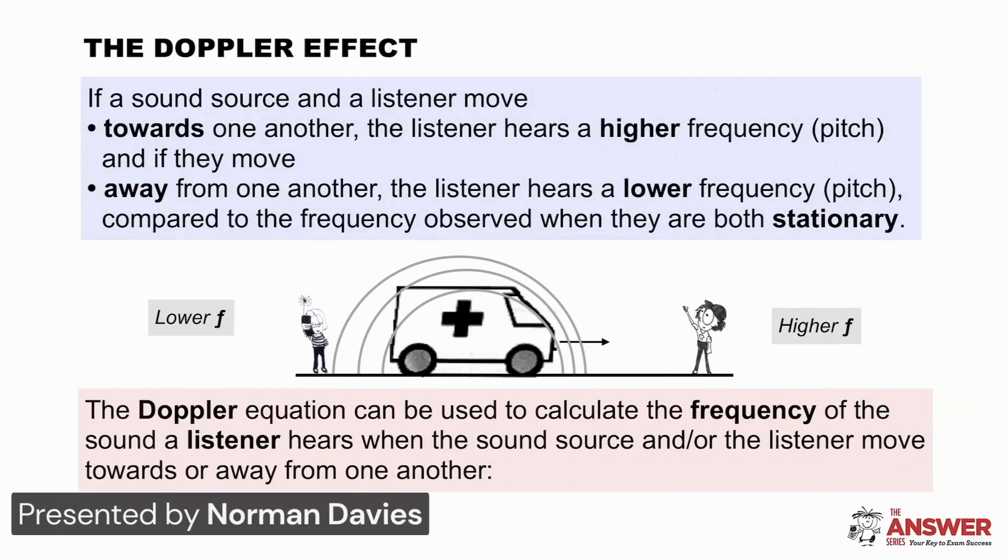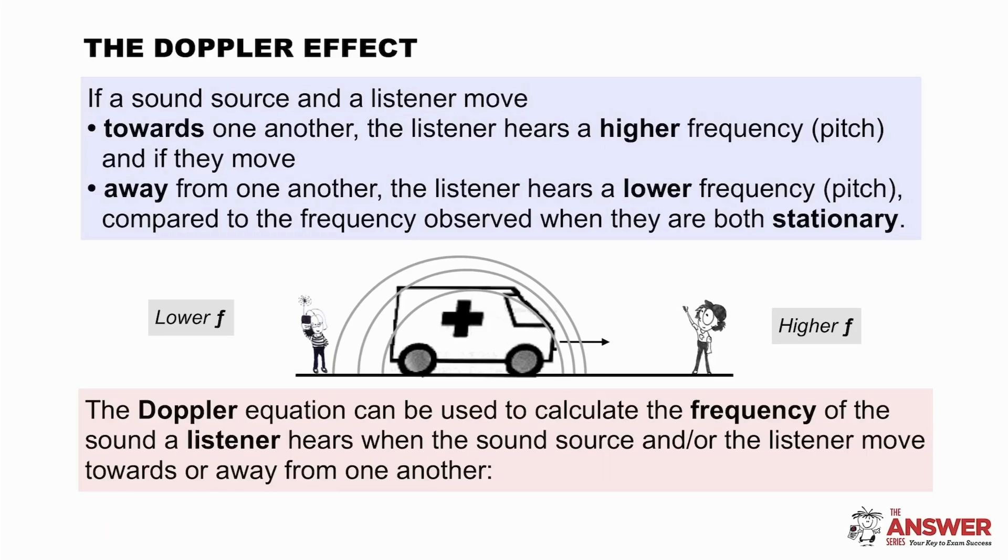In the previous video we saw how a sound can seem to be at a higher or lower frequency than it actually is. Christian Doppler worked out the relationship between the real and perceived frequencies and the speeds of the source, the observer and the sound. He put them together in what is now known as the Doppler equation.